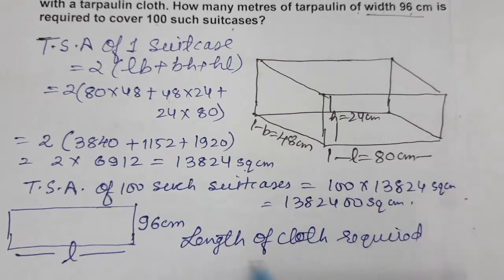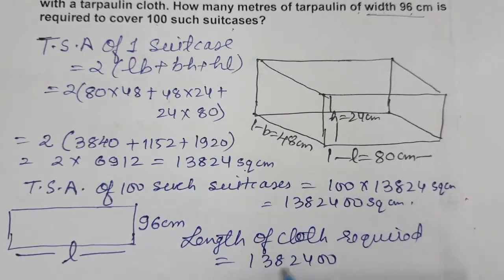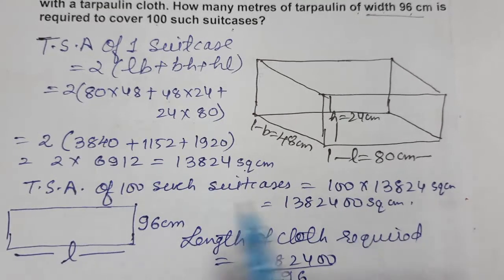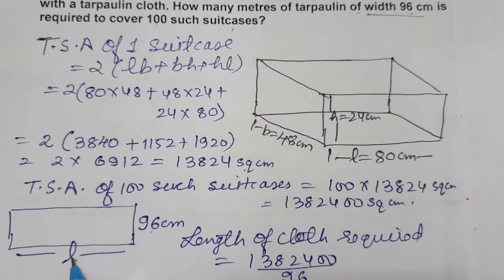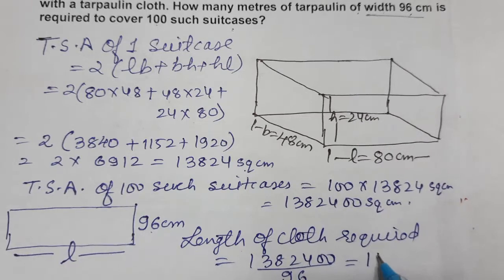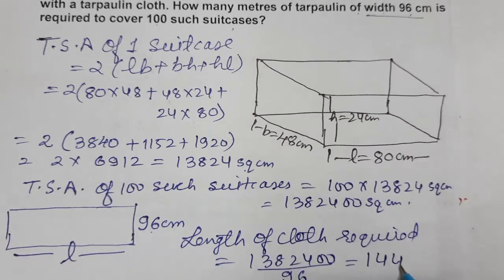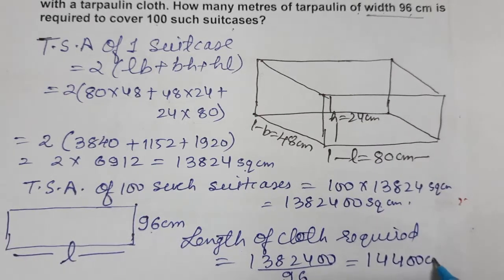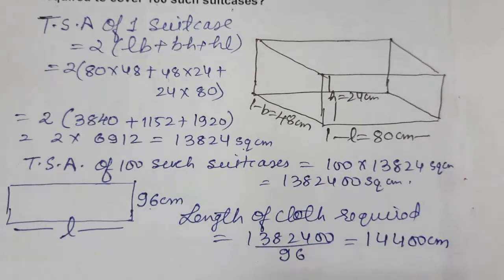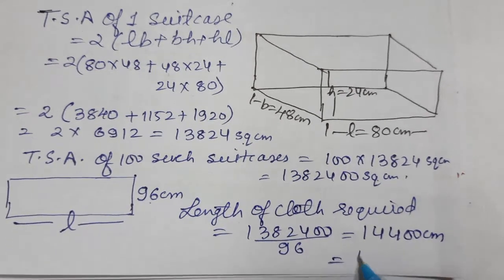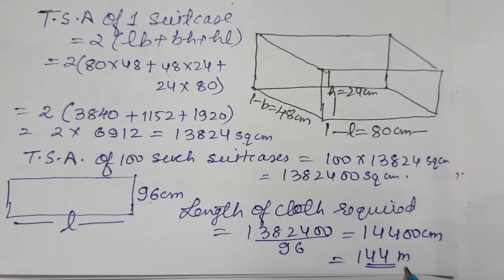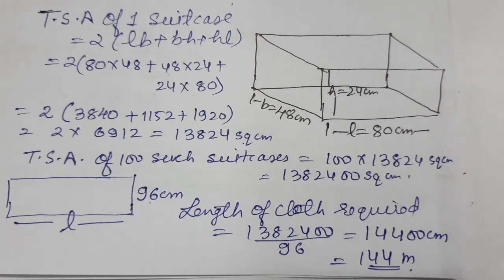Length of cloth required equals 1,382,400 divided by 96. When we divide, we get 14,400 centimeters. Converting to meters, that is 144 meters. So this is the length of cloth required to make 100 suitcase covers. I hope you understood. Thank you so much for watching the video.